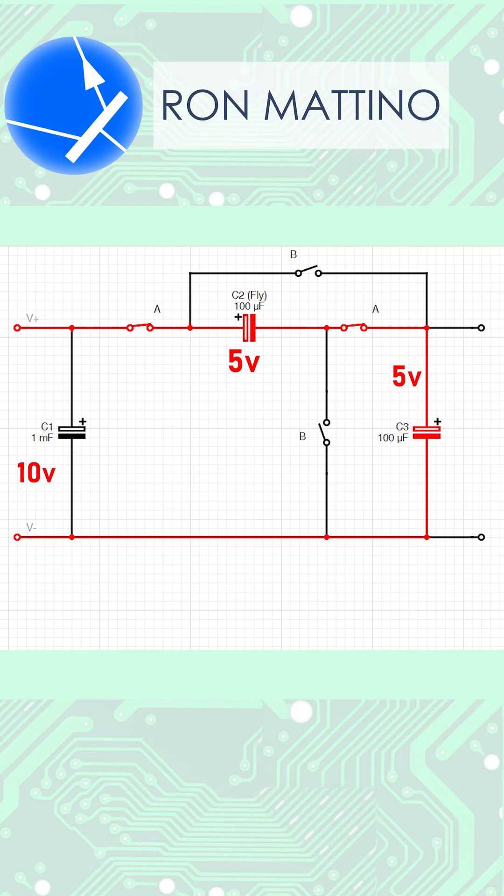Now phase B begins, C3 stays where it was, C2, however, is reconnected. And if you look carefully, you can see that it is now in parallel with C3. So currents of C2 and C3 add up. And at the output, we have half the input voltage and double the input current.